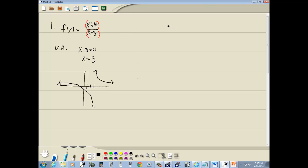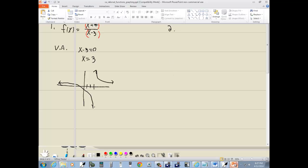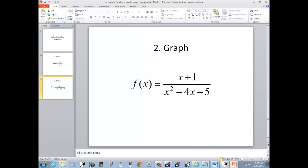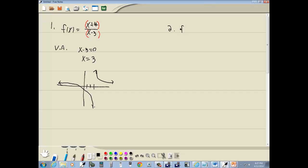Okay, let's look at our next one. We got f(x) is equal to (x+1) over (x² - 4x - 5). Let's take a look at the vertical asymptotes.